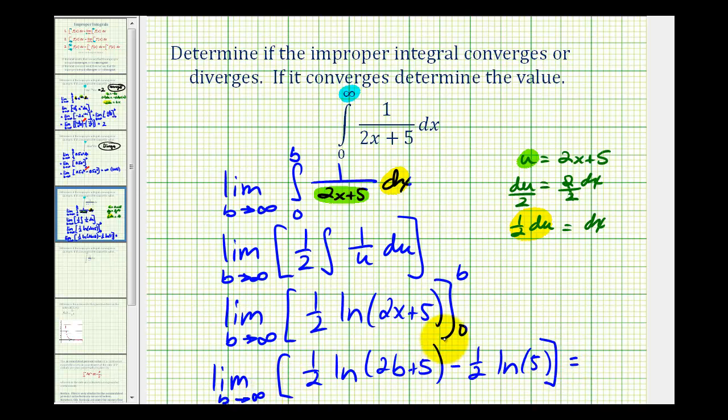And now we need to evaluate this limit. Notice that as b approaches infinity this quantity here increases without bound. And since the natural log function is an increasing function, this is approaching positive infinity. And this is not affected by b so we're subtracting a constant. Therefore this limit is approaching positive infinity which means it does not exist, which tells us that this improper integral diverges.